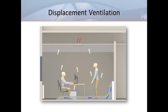Displacement ventilation takes a very different approach to providing comfort in the occupied zone. Instead of trying to eliminate temperature stratification throughout the space, displacement takes advantage of the natural buoyancy of air to create stratification as warmer air and pollutants rise towards the ceiling. For this reason, displacement systems are also known as fully stratified systems.